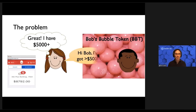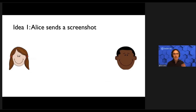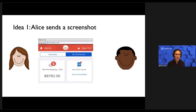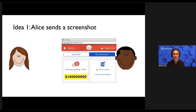So she goes to Bob and says she's got more than $5,000 in her bank account. Naturally, Bob's response is: can you prove it? First idea is for Alice to take a screenshot of her bank account balance and send it to Bob. But this is a problem in that it's relatively easy to modify a screenshot using, say, Photoshop. Alice might have no money in her account and yet pretend to be a multimillionaire. So clearly, this isn't going to work.